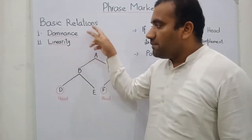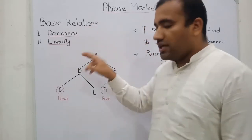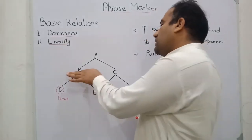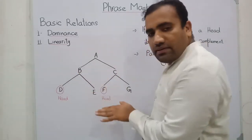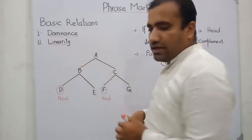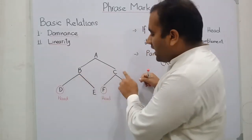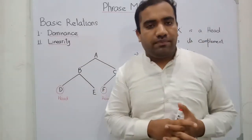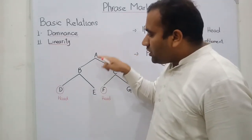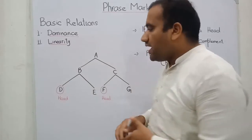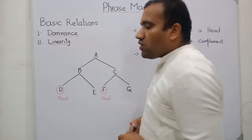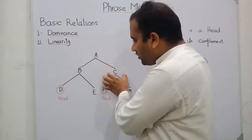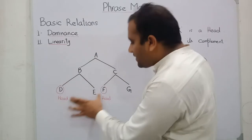Dominance and linearity — these two things we will observe in this diagram. Focus on the upper diagram: you can notice that there is B and C, and A is dominating over B and C. One item is dominating over two items — this is the dominance property. A dominates B and C, and the same applies to the layers below.